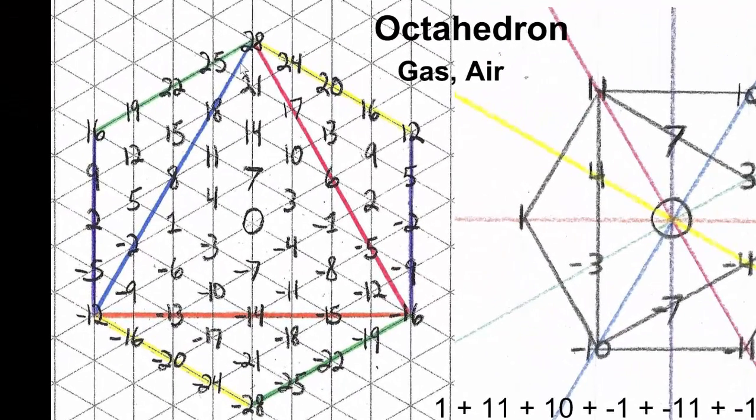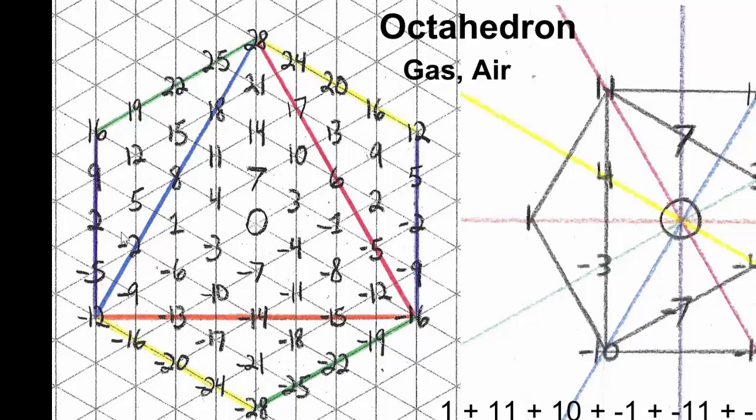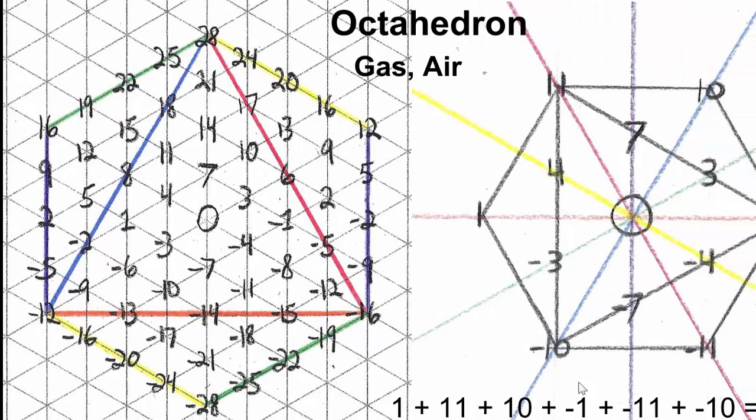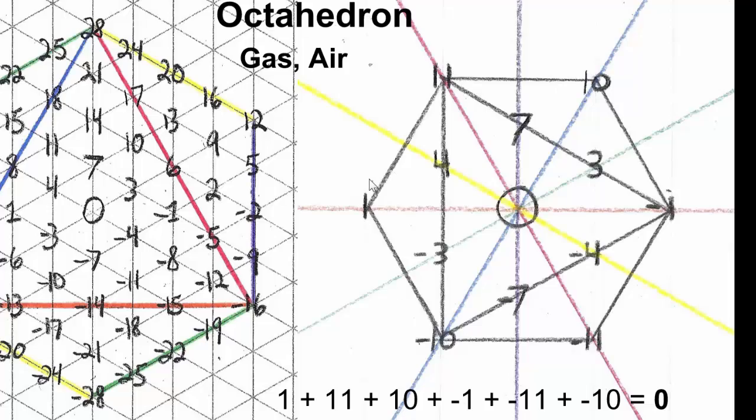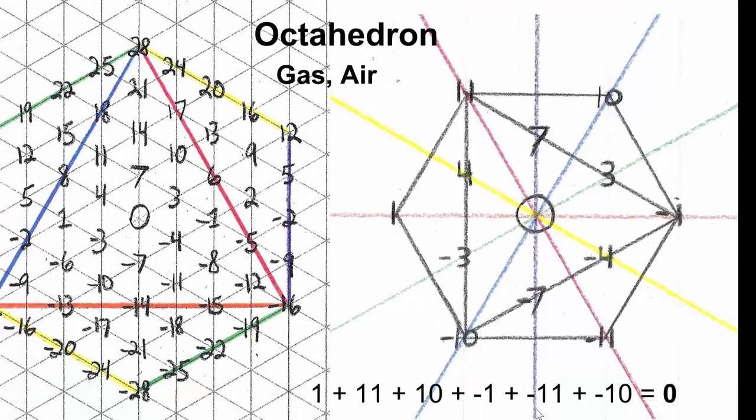The octahedron counts by threes, fours, tens, elevens, sevens, and ones. And when drawn in its smallest form, creates an equation that will also create zero.